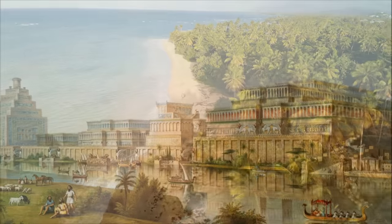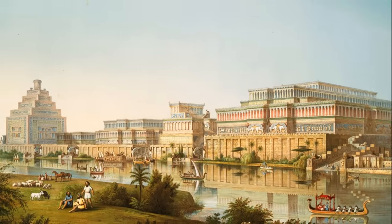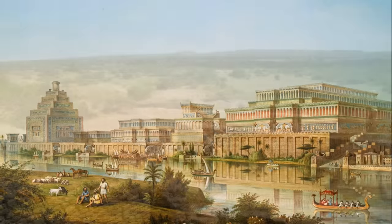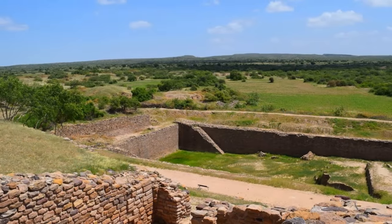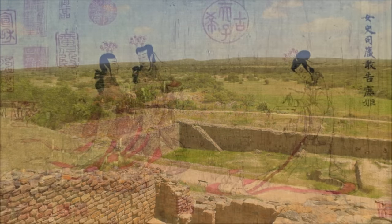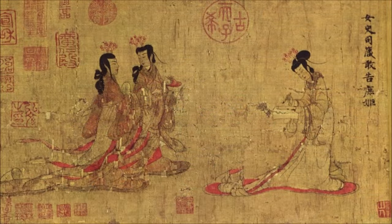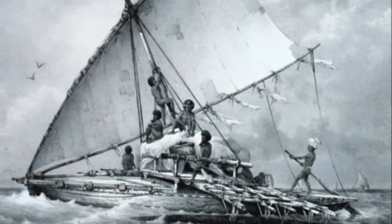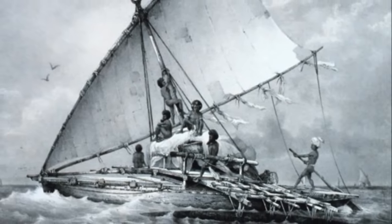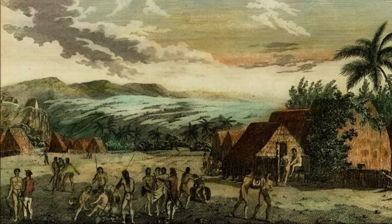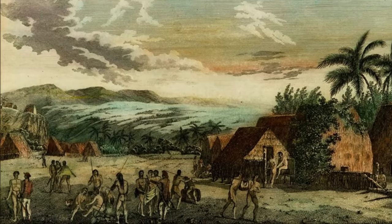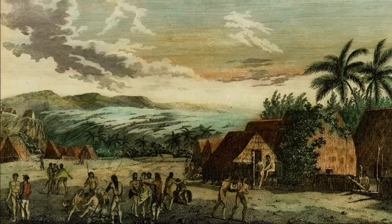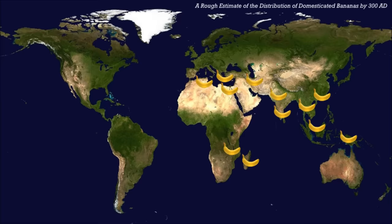There is evidence that domesticated bananas reached the Middle East by about 1100 BC. If so, they were likely in India before this. They likely reached China around 200 AD, East Africa, where they would also take on great agricultural importance, by 500 AD at the latest, and Hawaii by at least the 1300s AD. There is some evidence to suggest that domesticated bananas may have mysteriously reached places like Africa and India long before these dates, but this is again debated.